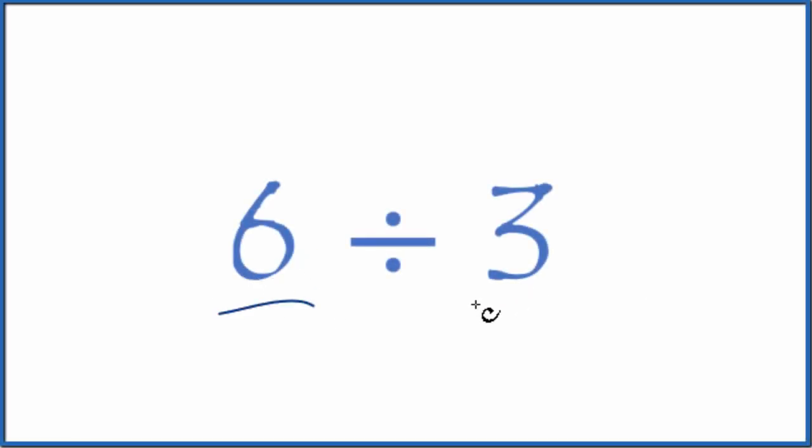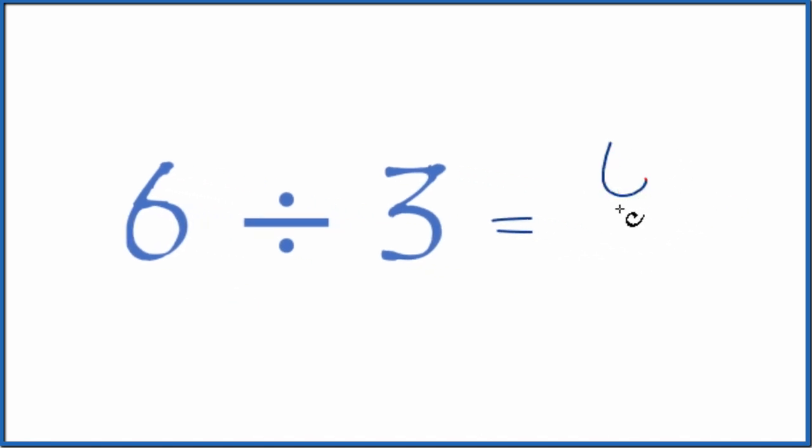If you need to divide 6 by 3, here's how you do it. So the first thing you could do is think about this as a fraction. It would be 6 over 3. That's the same thing as 6 divided by 3.